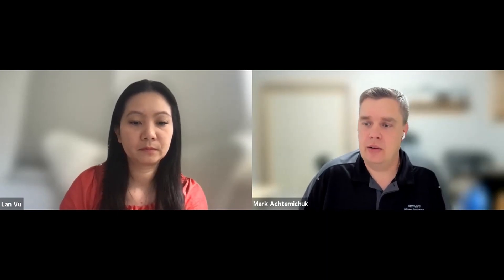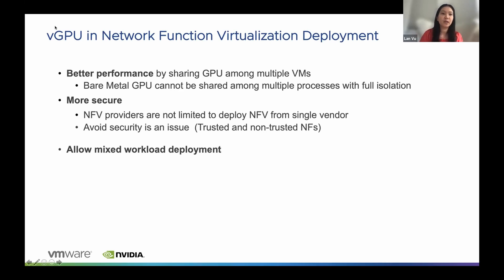With that, network function virtualization is a solution that helps reduce investment cost on proprietary hardware by virtualizing network functions onto regular computing platforms like CPUs or GPUs. The idea is similar to what we're doing with NSX — we've already turned these into virtualization. The benefit of using GPU in our study is that we primarily focus on using virtual techniques to enhance performance of network functions even further, by sharing physical GPU hardware with multiple virtual machines.